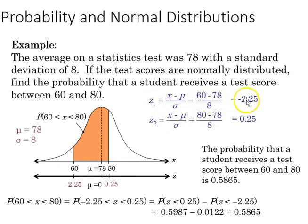For the 60, the z-score is minus 2.25, whereas for 80 it is 0.25, so we need to look up the areas for that, and we find we subtract 0.0122 from 0.5987, giving us the in-between area of 0.5865.